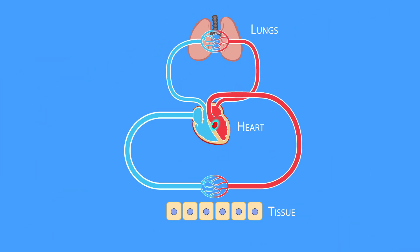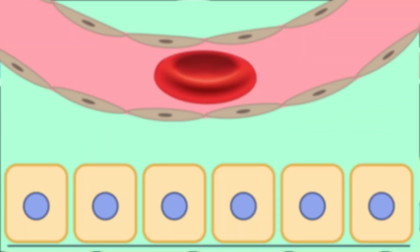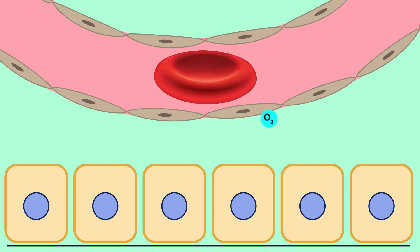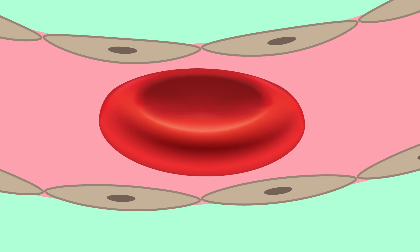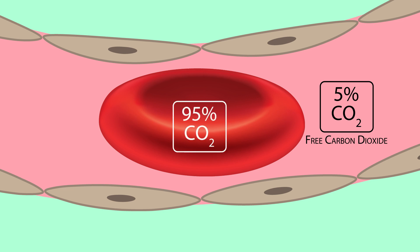As the oxygen-rich red blood cells reach the capillary beds within tissues, the oxygen is released from the red blood cells in exchange for carbon dioxide. Of the carbon dioxide that is produced and released from tissues, about 5% dissolve directly in the plasma, while the other 95% diffuses into the red blood cells.